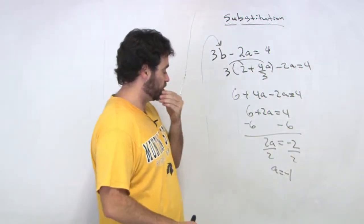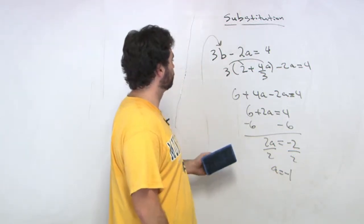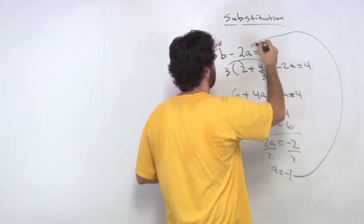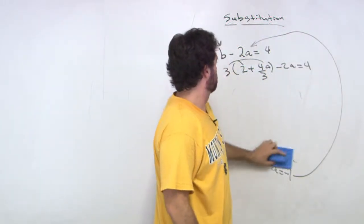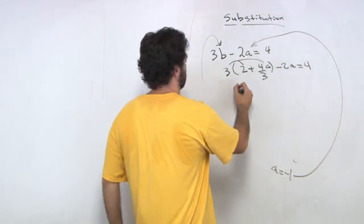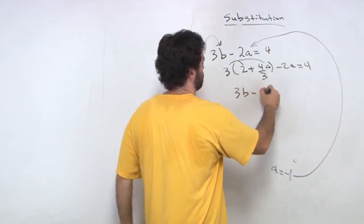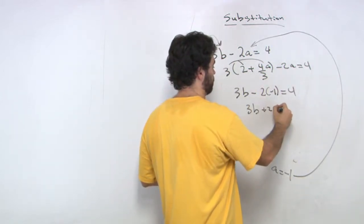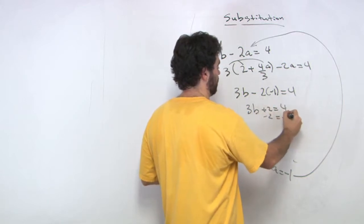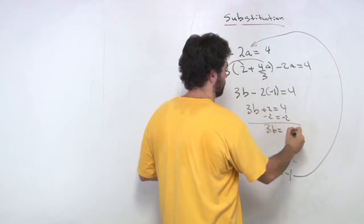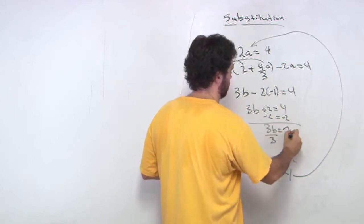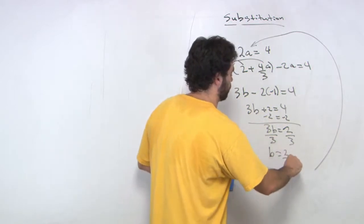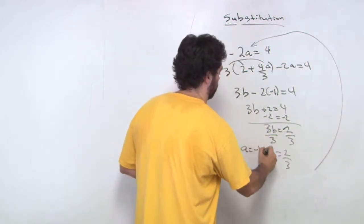Started out with a fractional equation, and then we came down to a equals 1. I'm going to replace that a equals 1 into this equation, and solve for b. So I get 3b minus 2 times negative 1 equals 4. So we get 3b plus 2 equals 4, minus 2. We get 3b equals 2, divided by 3. And we get b equals 2 over 3.